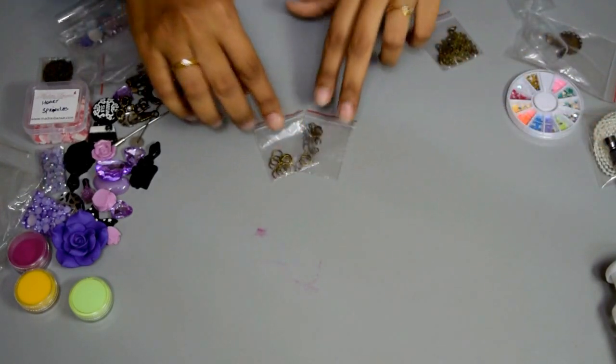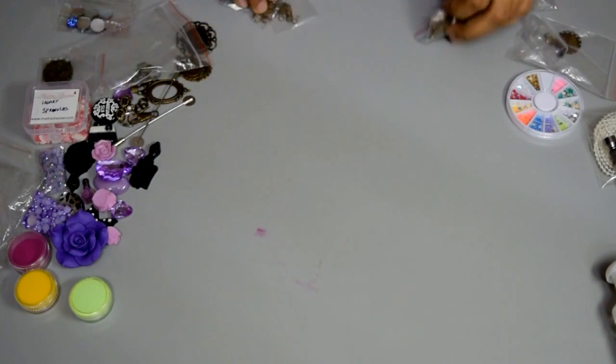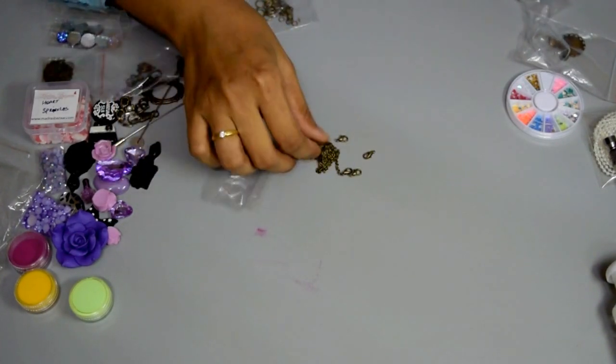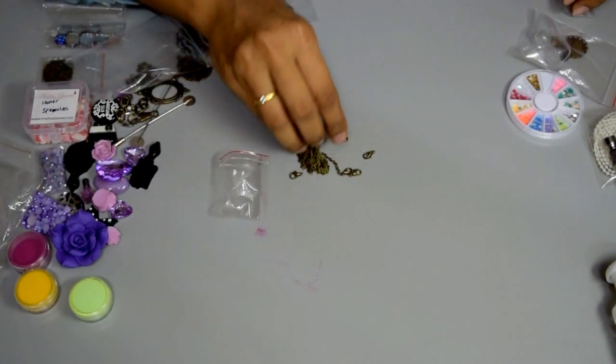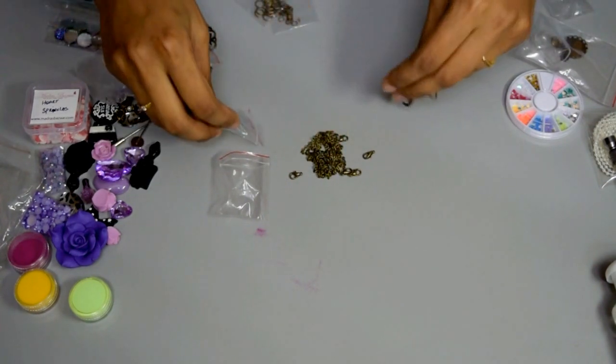Some antique bronze jump rings. A big chain and hook. And again there is this small chain.